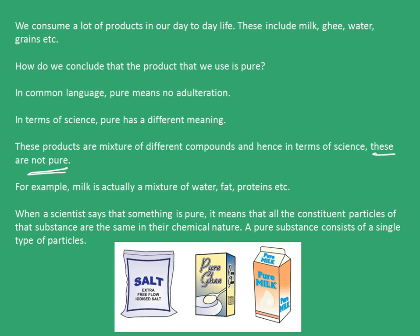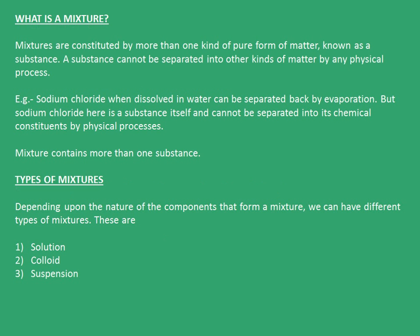For example, milk is actually a mixture of water, fat, proteins, etc., and hence in terms of science, milk cannot be considered as a pure substance. When a scientist says that something is pure, it means that all the constituent particles of that substance are the same in their chemical nature. A pure substance consists of a single type of particles. Mixtures are constituted by more than one kind of pure form of matter, known as a substance.